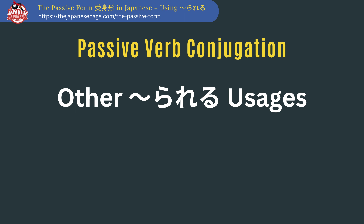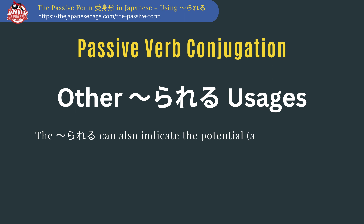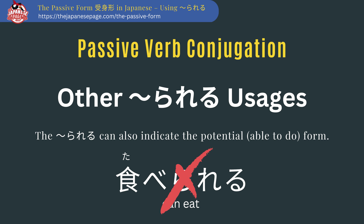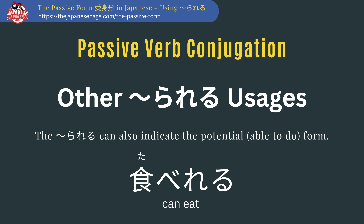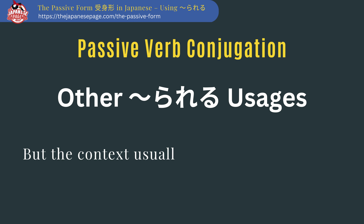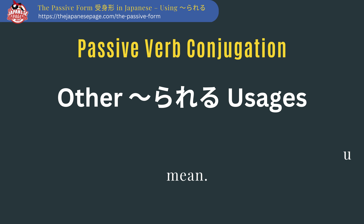Other rareru usages. While out of the scope of this video, one more tricky part is that rareru can also indicate the potential — the able-to-do form. For example, taberareru can be the passive ('was eaten') or the potential ('can eat'). Because of this confusion, dropping the ra when meaning the potential form is common — many people say tabereru for 'able to eat.' There's also overlap with polite keigo language, but context usually makes it clear what you mean.